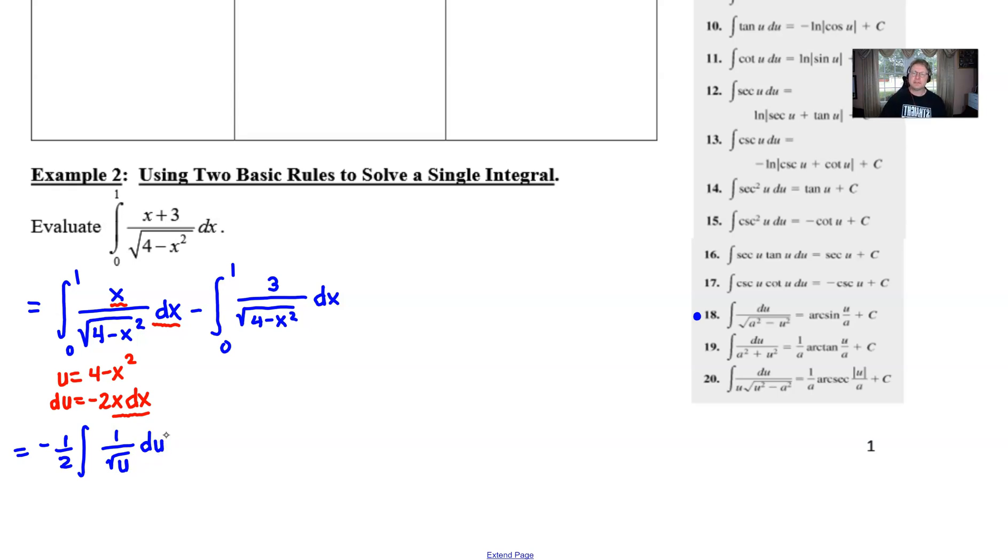Now we need to change boundaries. I'm going to go ahead and leave this problem in terms of u. So what we're going to notice in this particular case is that if we were to plug our upper boundary 1 in for x we would have 4 minus 1 squared which of course is 3. And if we plug 0 in as a lower boundary, 4 minus 0 squared is going to be 4. So I need to swap those out accordingly.